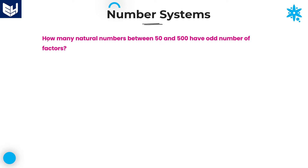How many natural numbers between 50 and 500 have odd number of factors?